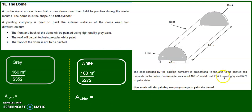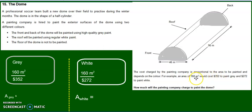And how are we going to figure out the cost? The cost charged by the painting company is proportional to the area to be painted, and it depends on the color. The key word here is proportional — so we have to make proportions.